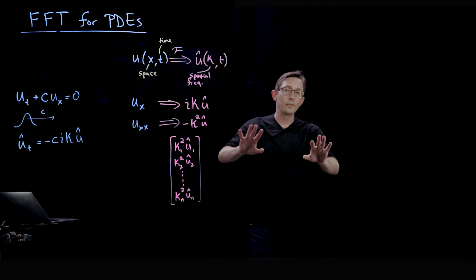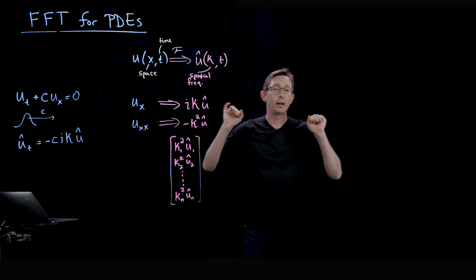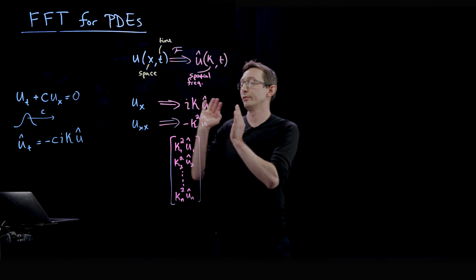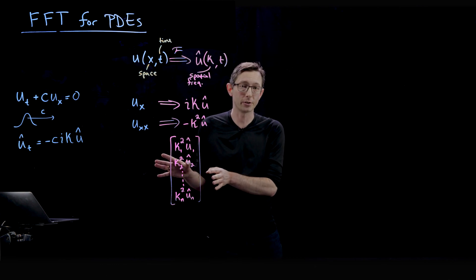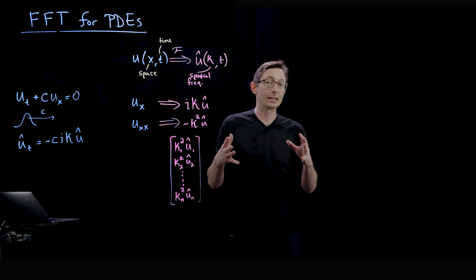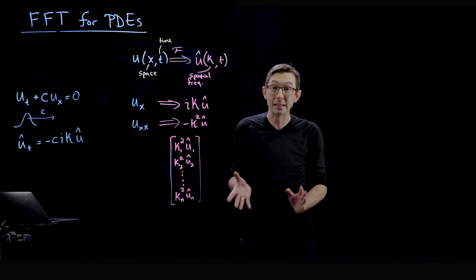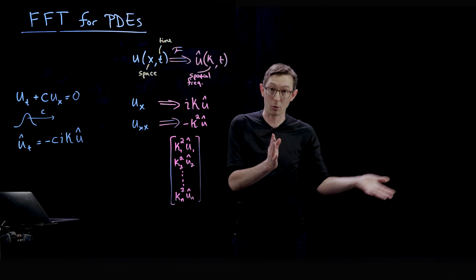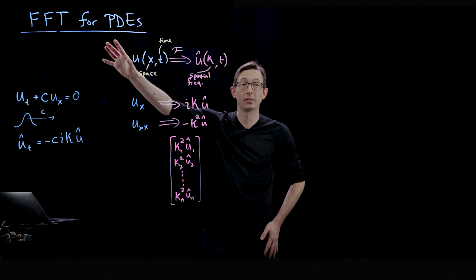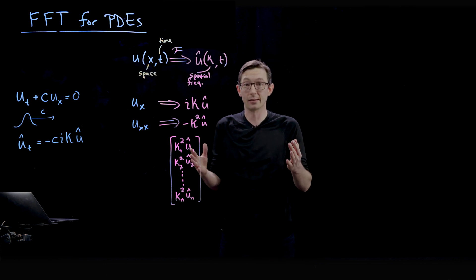Welcome back. We've been talking about the fast Fourier transform and solving PDEs. In the last video I showed you how to solve the heat equation using the fast Fourier transform. The heat equation is the perfect example of when to use the Fourier transform — in fact, the Fourier transform was invented as an eigenvector coordinate transformation for the heat equation. That's why the Fourier transform is here today.